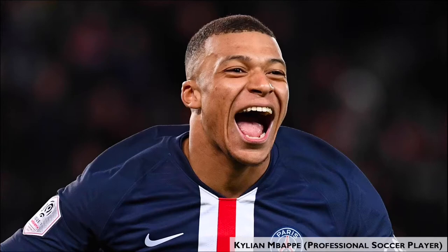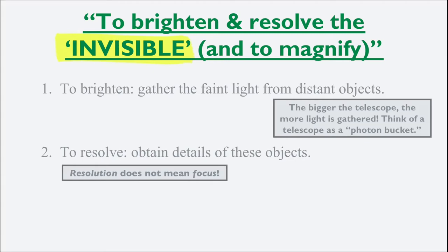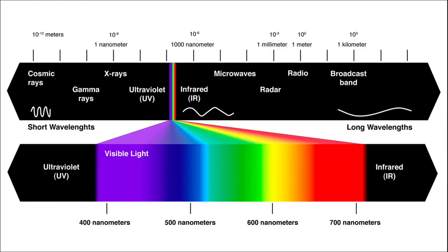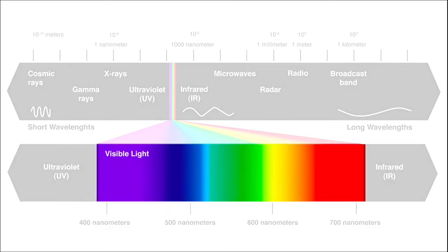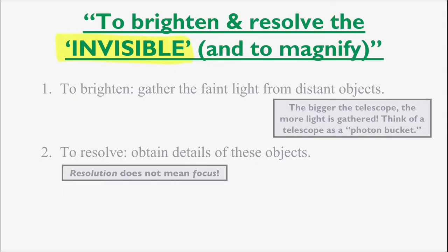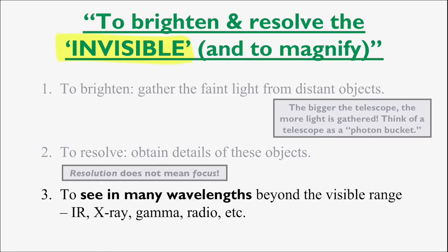So far, we've discussed the brightening and resolving abilities of telescopes, but the last item is crucial. Our eyes cannot see past the visible range of light, so telescopes help expand our vision by seeing those wavelengths that we can't. Oh yes — and to magnify too.